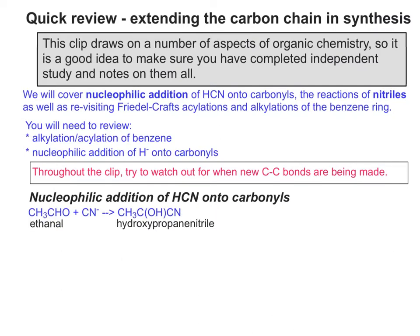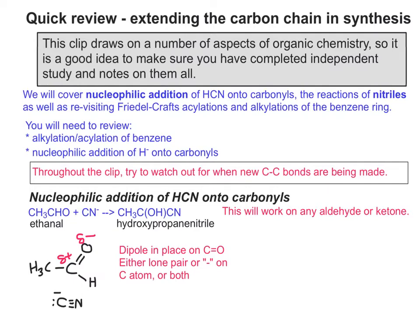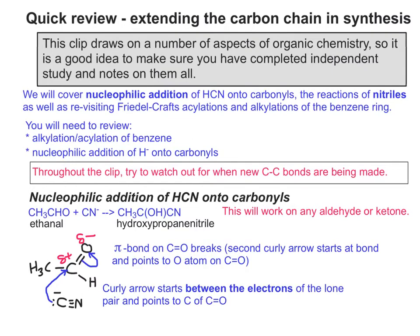The first example is the nucleophilic addition of HCN onto carbonyls, using ethanol as the example. This works on any aldehyde or ketone — anything with a true carbonyl group. At the beginning of your mechanism, make sure the dipole is in place on the C=O bond, and you have a lone pair or negative charge on the carbon atom, or both. The curly arrow starts between the electrons of the lone pair and points to the carbon of C=O.